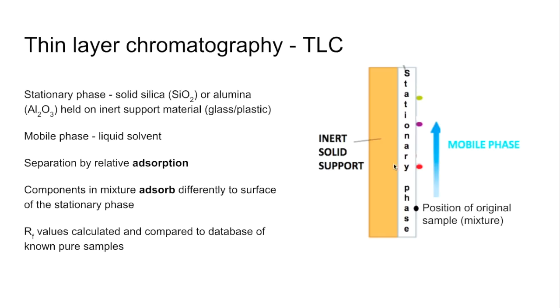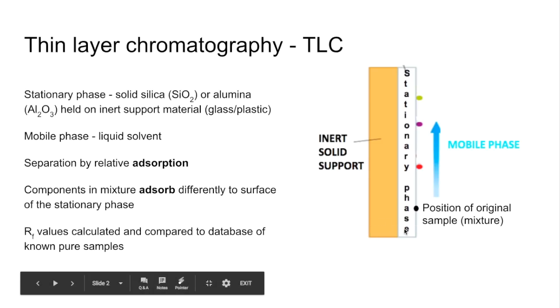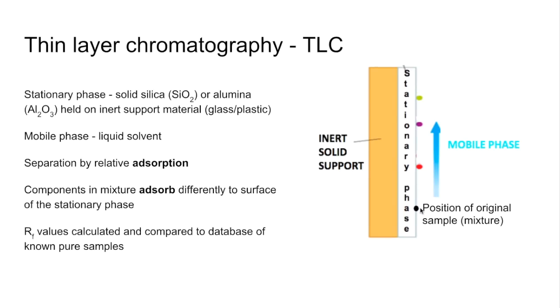The black spot at the bottom is the position of your original sample. The solvent, sitting in the bottom of a beaker or chromatography tank, travels up the TLC plate and pulls the components in the sample up with it. These different components are binding to the surface differently, and so they separate out.